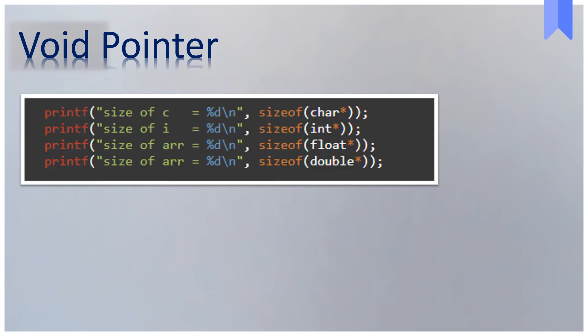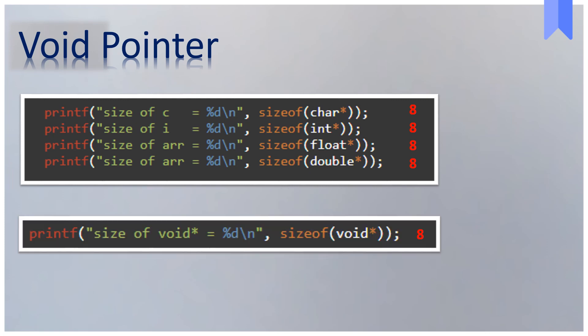Now let's try one more experiment, where we try to print different types of pointer size. Since a pointer stores the base address of any given object irrespective of its type, the size of the base address will always be the same. Hence, the memory occupied to store a pointer variable will always be same. With this, we can also conclude the size occupied by a void pointer will also be 8 bytes.